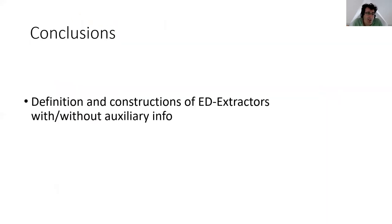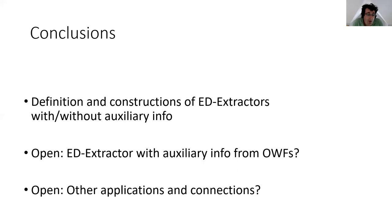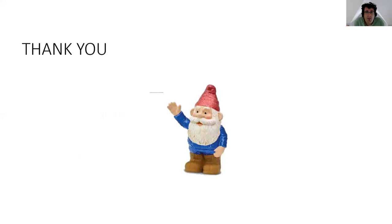To conclude: we saw definitions and constructions of these types of extractors in the setting with and without auxinfo. The main open question left by this work is whether we can construct these extractors in the setting with auxinfo from just one-way functions, without relying on stronger assumptions that imply public-key cryptography. All of our current constructions are based on things like DDH and LWE — stronger assumptions in cryptomania — and we don't know whether one-way functions alone suffice. The other open question is whether this interesting primitive has other applications and connections to other problems in cryptography. Thank you very much for listening.